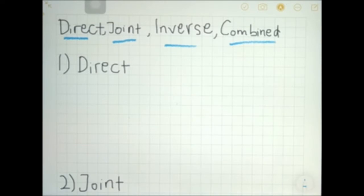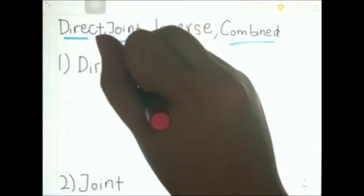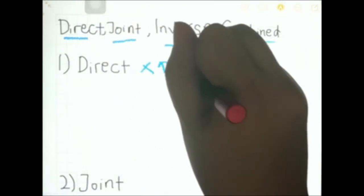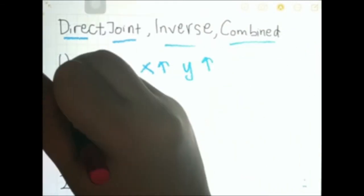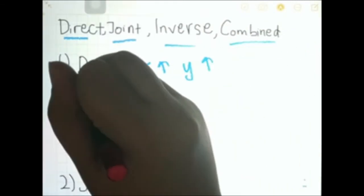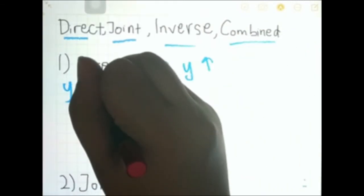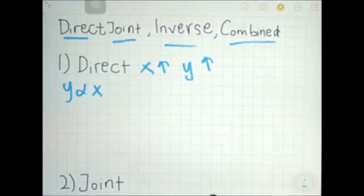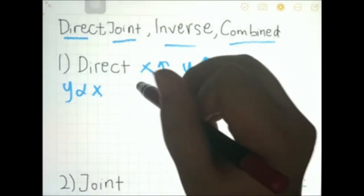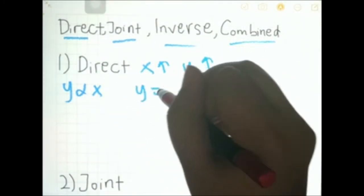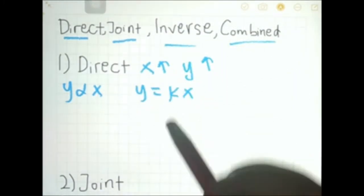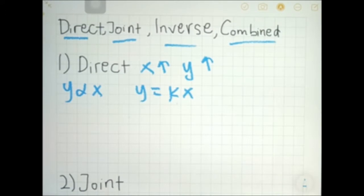Firstly, direct variation is when x increases, y will increase. Y varies directly with x. So in equation form, we write it as y equals kx. K is a constant.